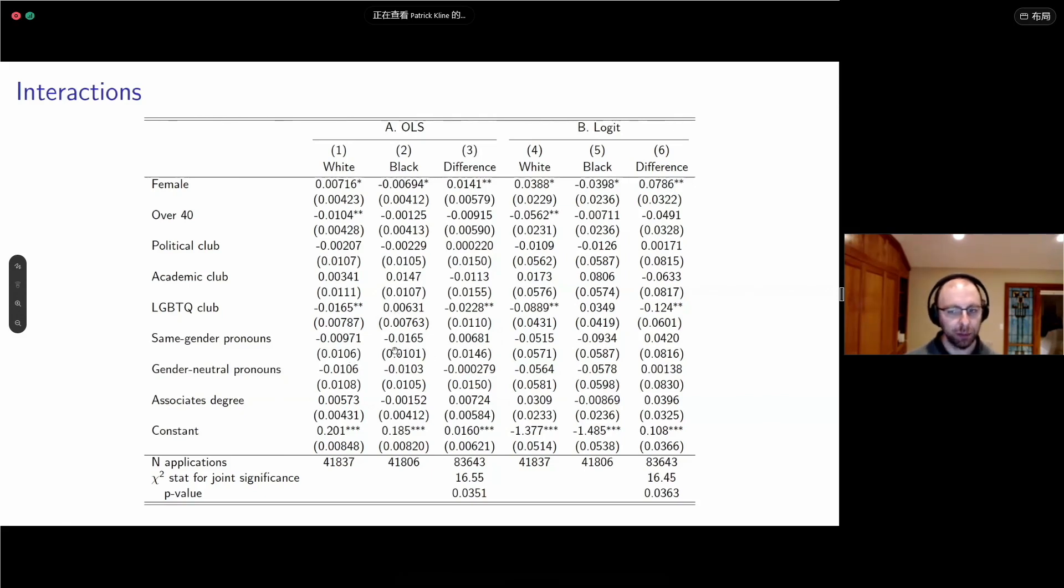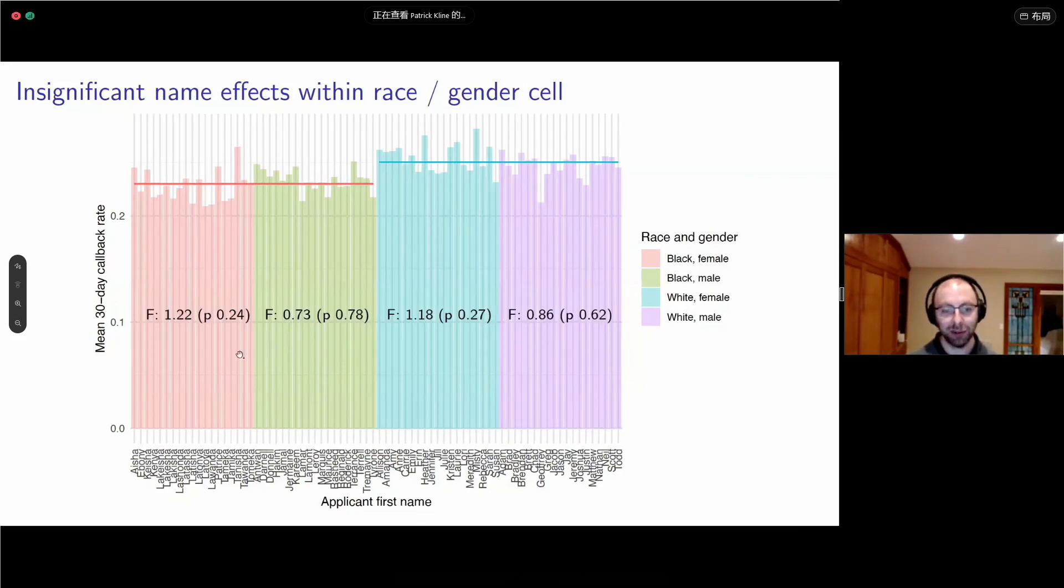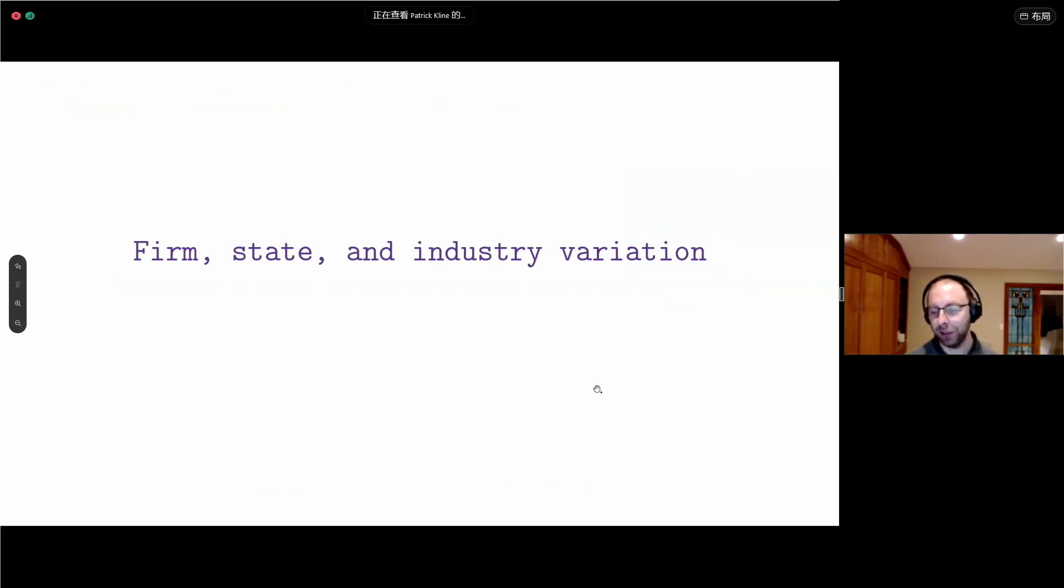You might wonder how much of what we're seeing is actually the whiteness or blackness of the name versus something else about the name. Here we've color coded the callback rates by the applicant's first name. We do a simple F test for whether there's any variation within race and gender cell. You can't reject that all that's going on here is differential treatment by race and gender. So almost all the variance is attributable to their race and sex.